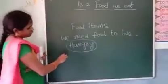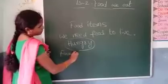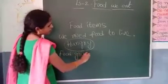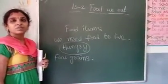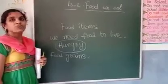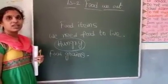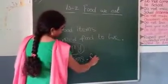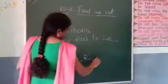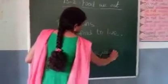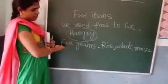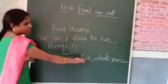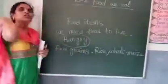What are the food grain items? Food grains — what are those grains, children? Rice, wheat, maize — these are called food grains. Rice, wheat, maize — these are food grains.